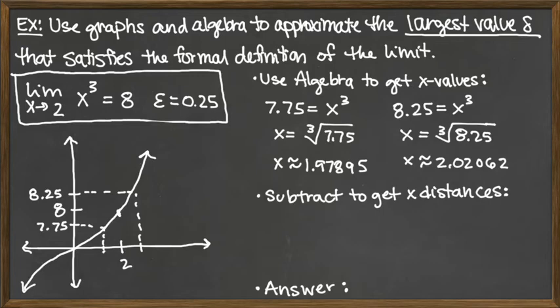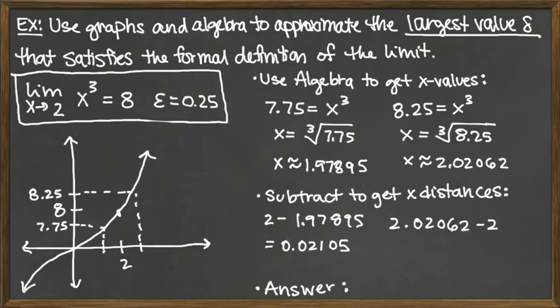Certainly you want these to be positive distances, so we're going to have the larger value 2 minus the 1.97895. And that distance there is going to then be 0.02105, okay? In comparison, we've got the larger value 2.02062, subtract the 2, and then so we just drop the 2 there from the front. So it's 0.02062, okay? So now those are the two values that we're looking at. There are candidates for delta.